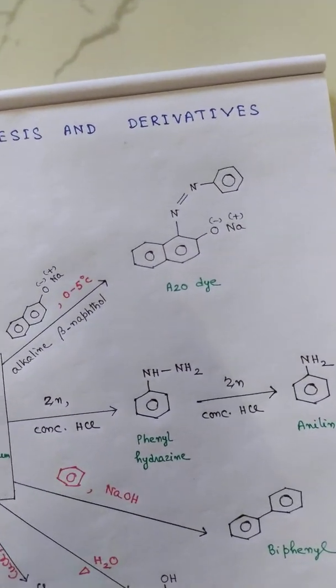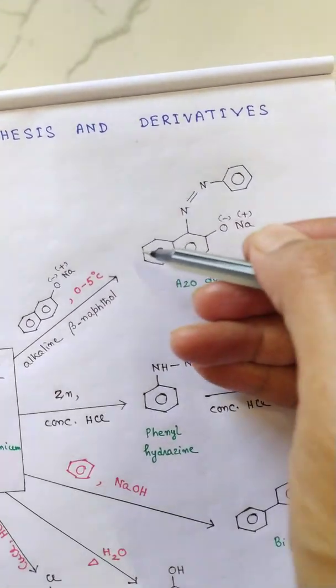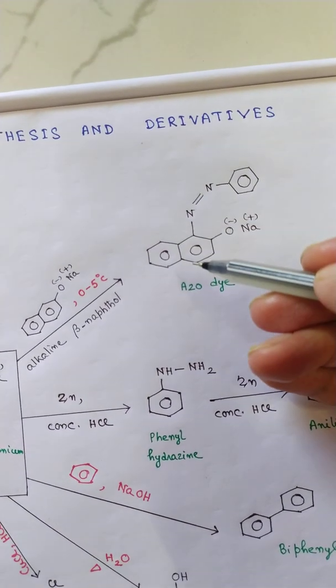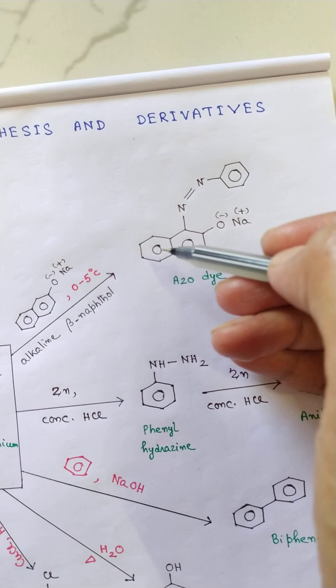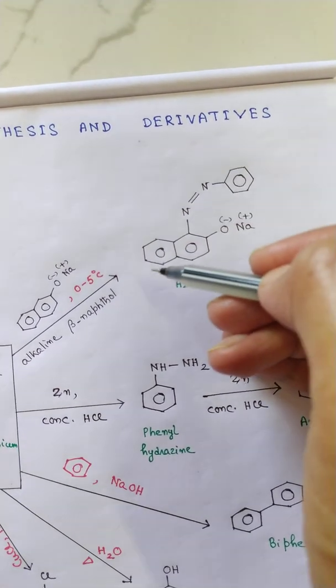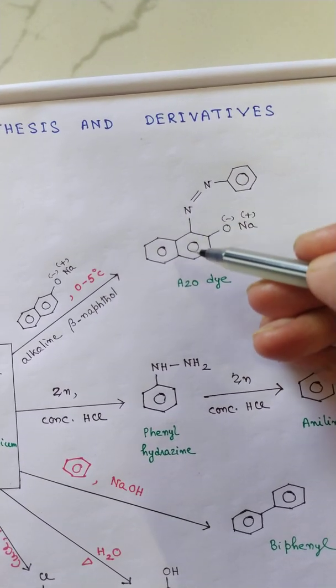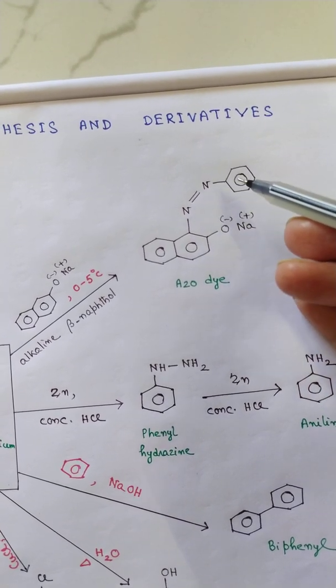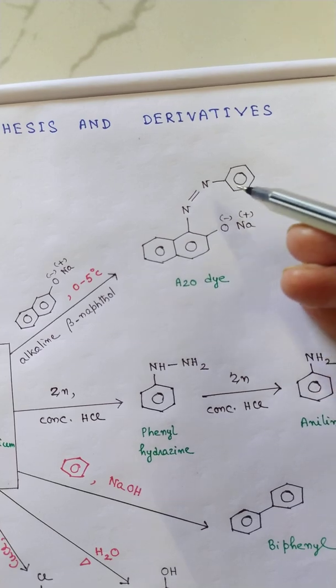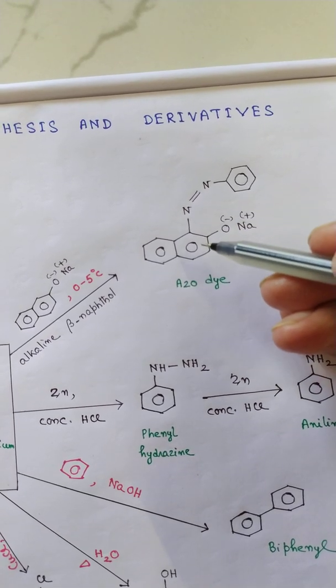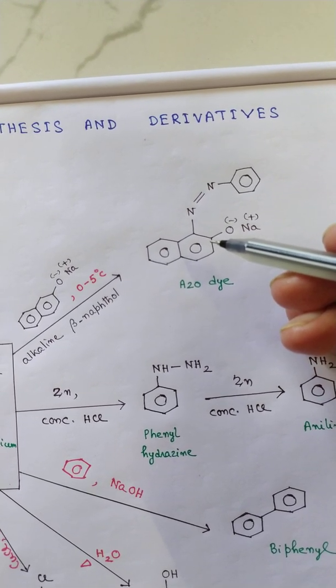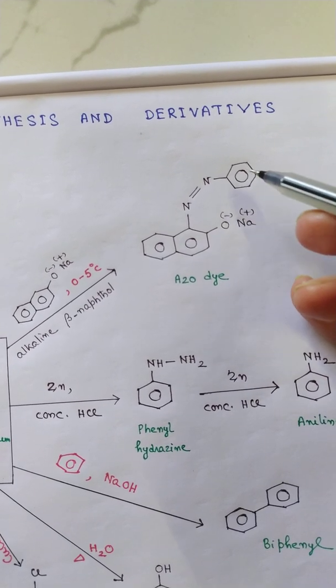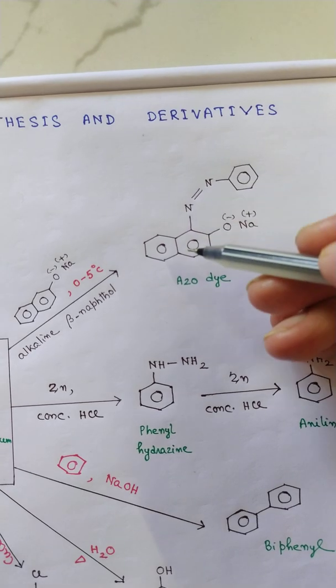Why azo dye? Beta naphthol is colorless. Benzene diazonium chloride is colorless. But when they combine, they give sufficient space to the electron to form a particle in a box, so that the energy gap corresponds to the visible light. We will show recently in the upcoming videos how color comes, how visible color comes in some compounds.